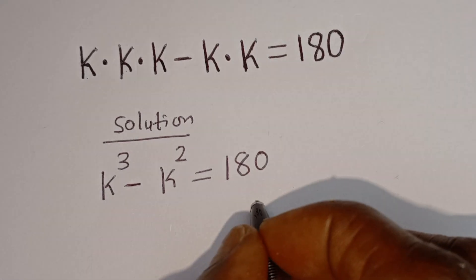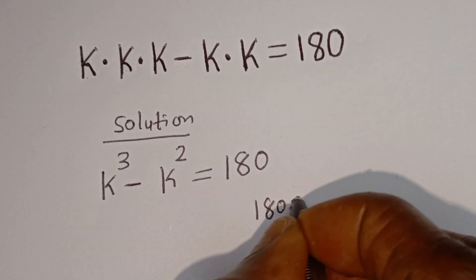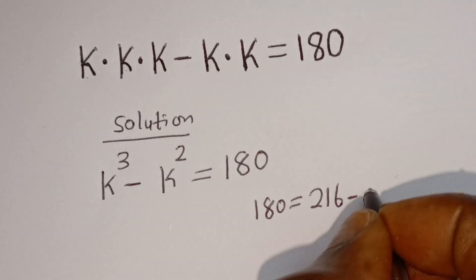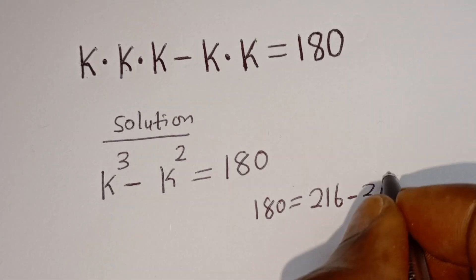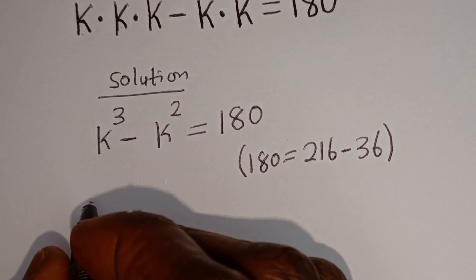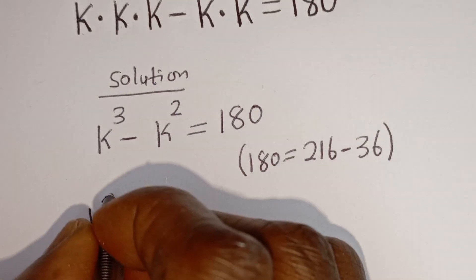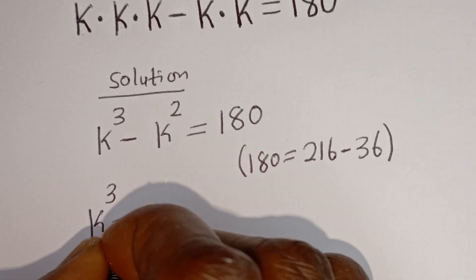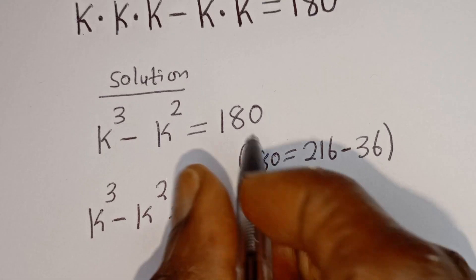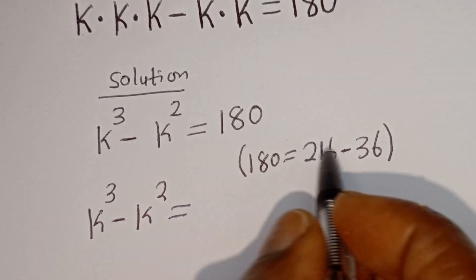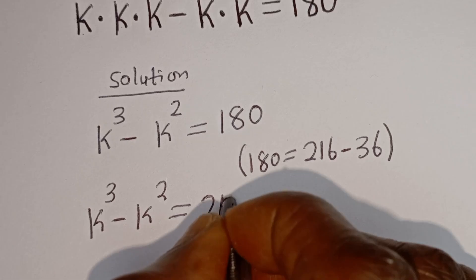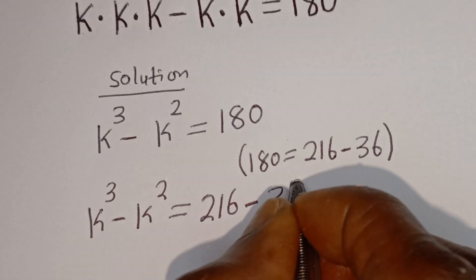Now 180 is equal to 216 minus 36. Then here we have K to the power of 3 minus K squared is equal to — let's replace this 180 by 216 minus 36.